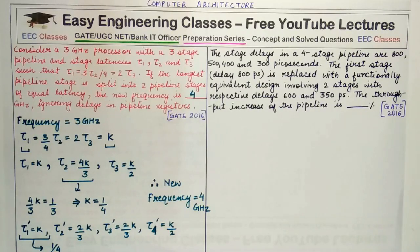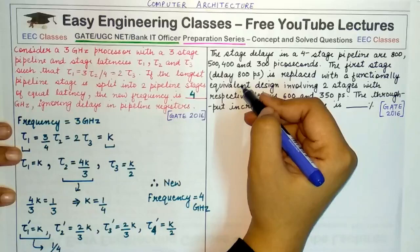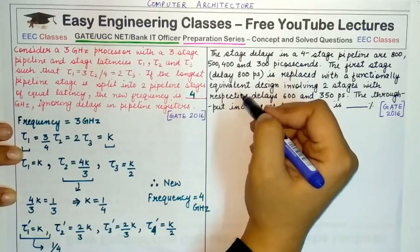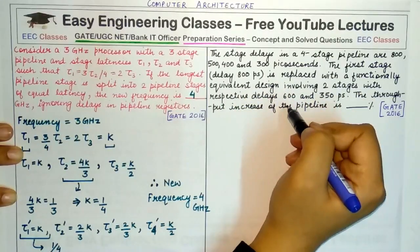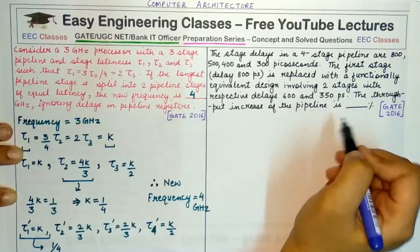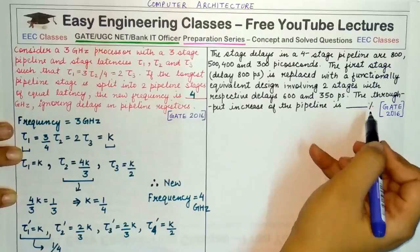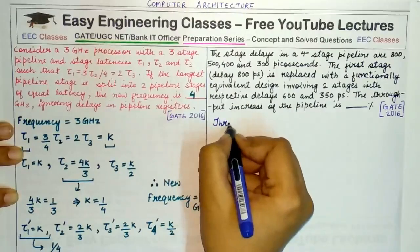The question is: The stage delays in a 4-stage pipeline are 800, 500, 400, and 300 picoseconds. The first stage delay of 800 picoseconds is replaced with a functionally equivalent design involving two stages with respective delays 600 and 350 picoseconds. The throughput increase of the pipeline is ___ percent. So what is actually throughput?